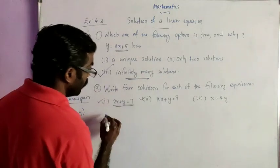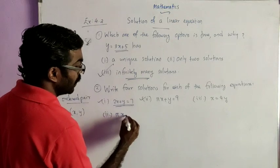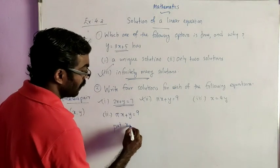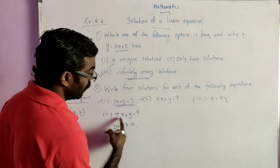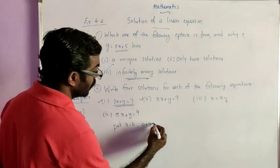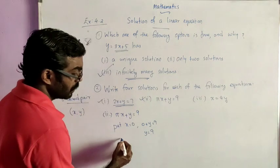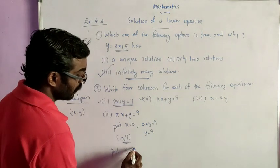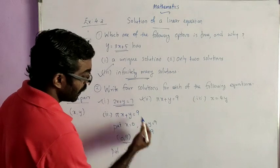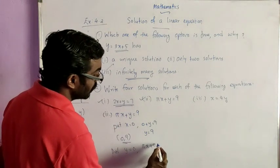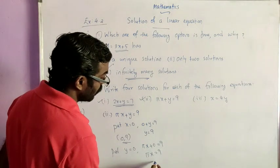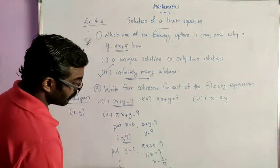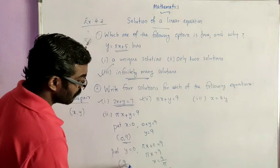Now consider the second equation: 5x plus y is equal to 9. Put x equal to 0: then 0 plus y equals 9, so y equals 9. The solution is (0, 9). Put y equal to 0: then 5x equals 9, so x equals 9/5. The solution is (9/5, 0).